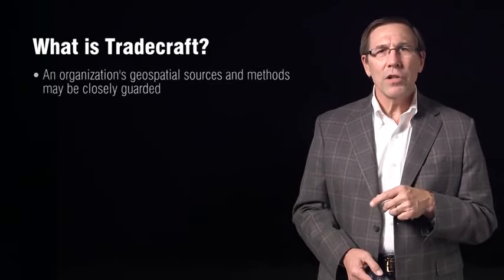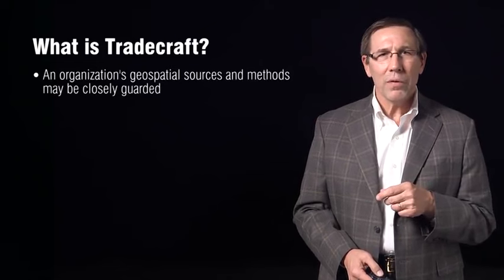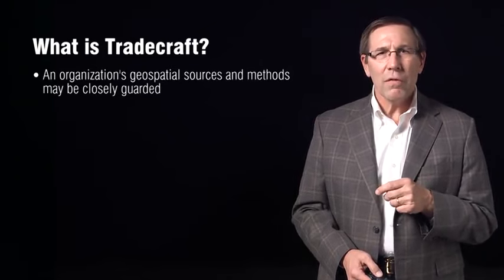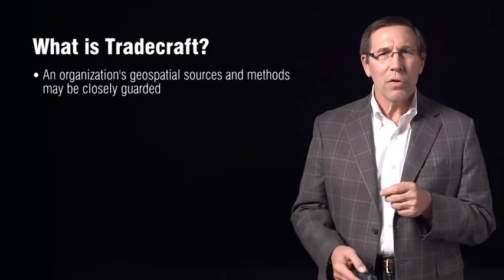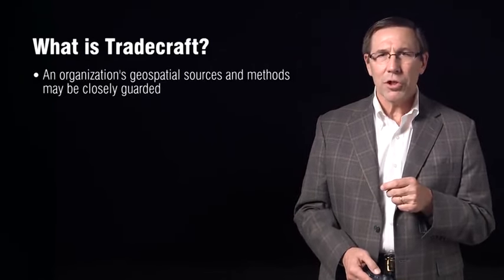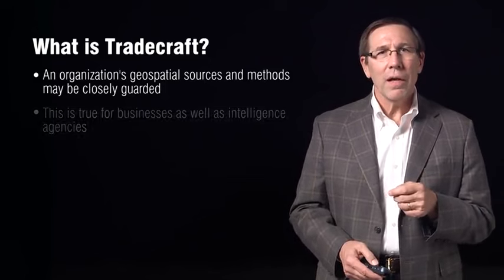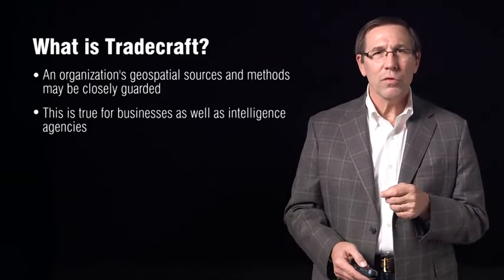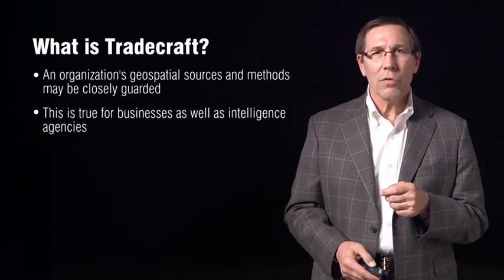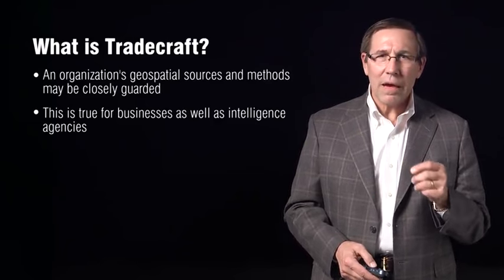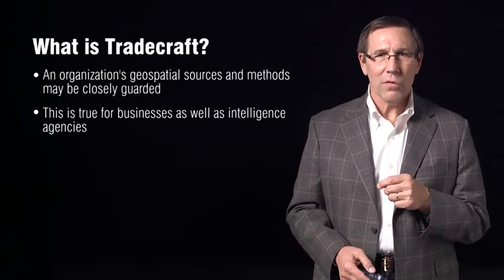An organization's geospatial sources and methods may be closely guarded so as not to give opponents or targets of interest the opportunity to know the capabilities and interests of their opposition. This is not unique to the intelligence agency or to geospatial intelligence. Businesses surround their equivalent of sources and methods in a cloak of secrecy because they are essential to the success of the business.